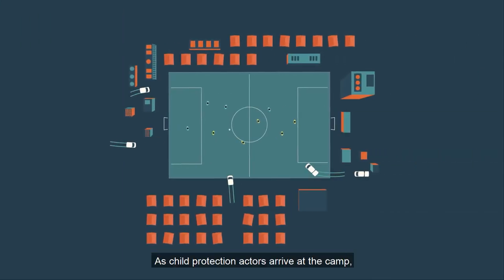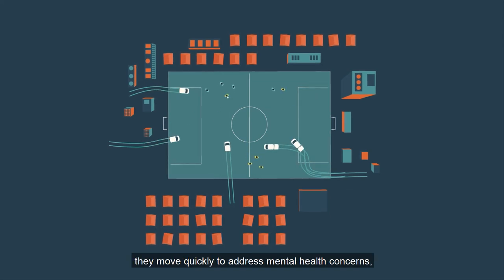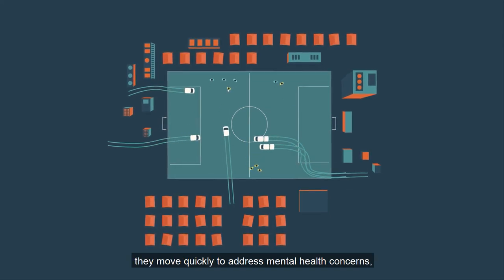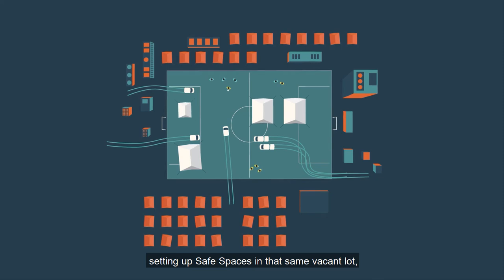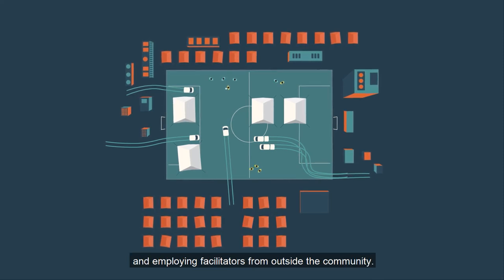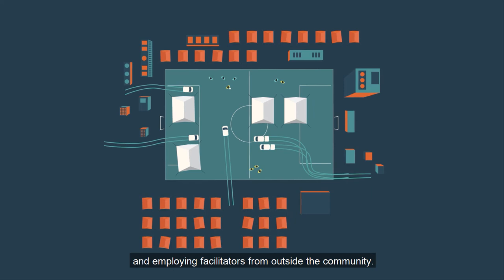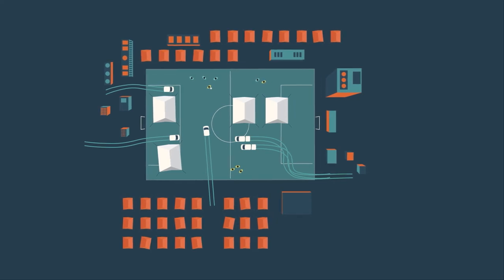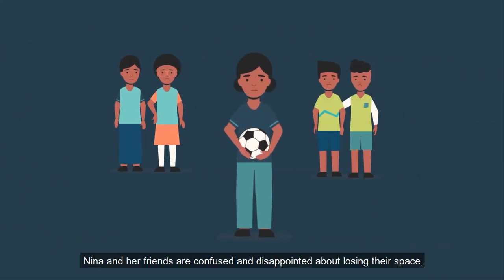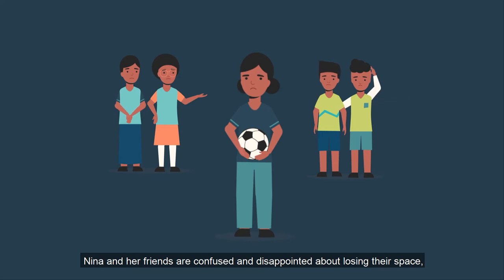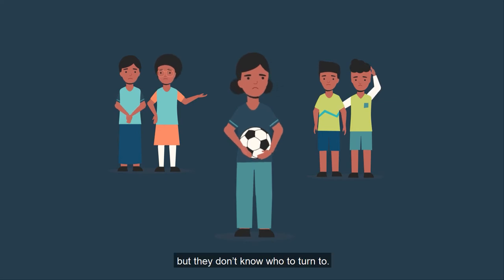As child protection actors arrive at the camp, they move quickly to address mental health concerns, setting up safe spaces in that same vacant lot and employing facilitators from outside the community. Nina and her friends are confused and disappointed about losing their space, but they don't know who to turn to.